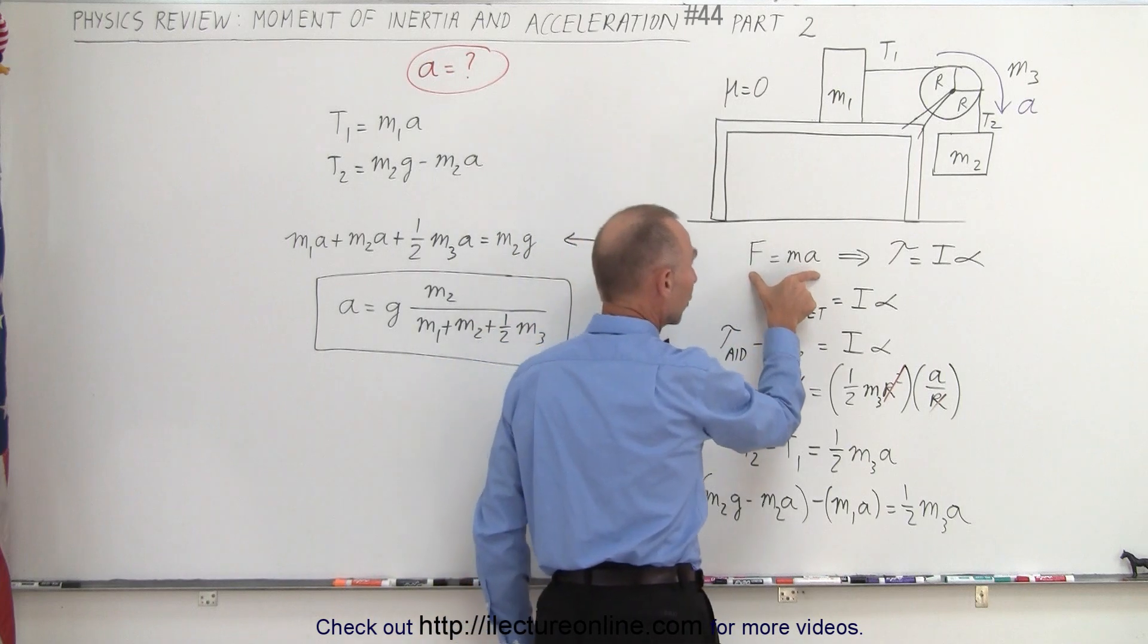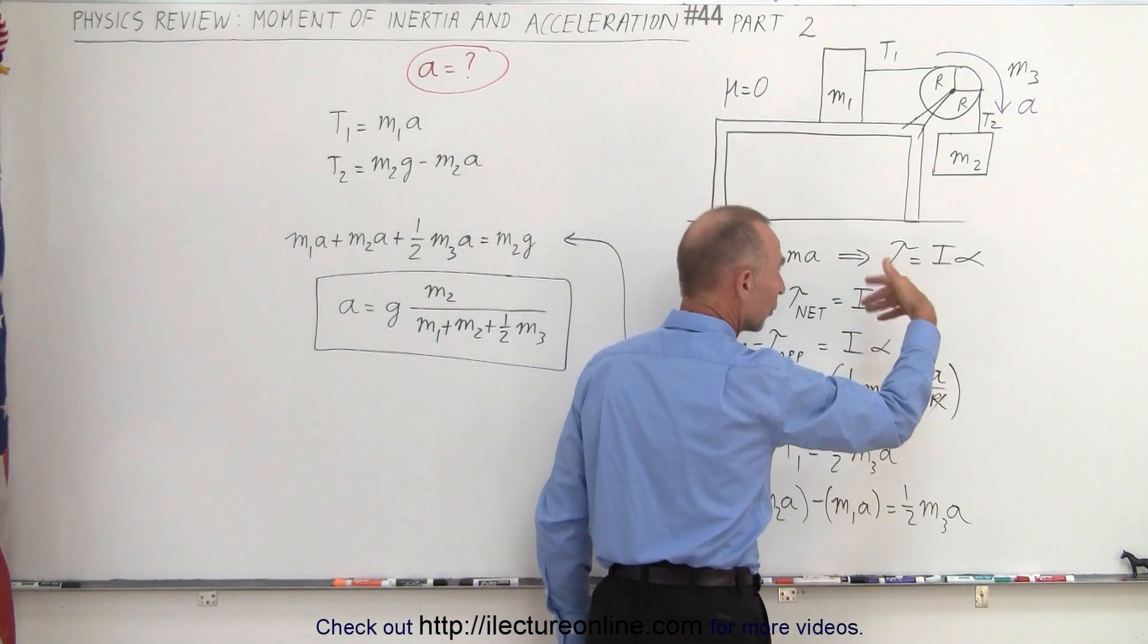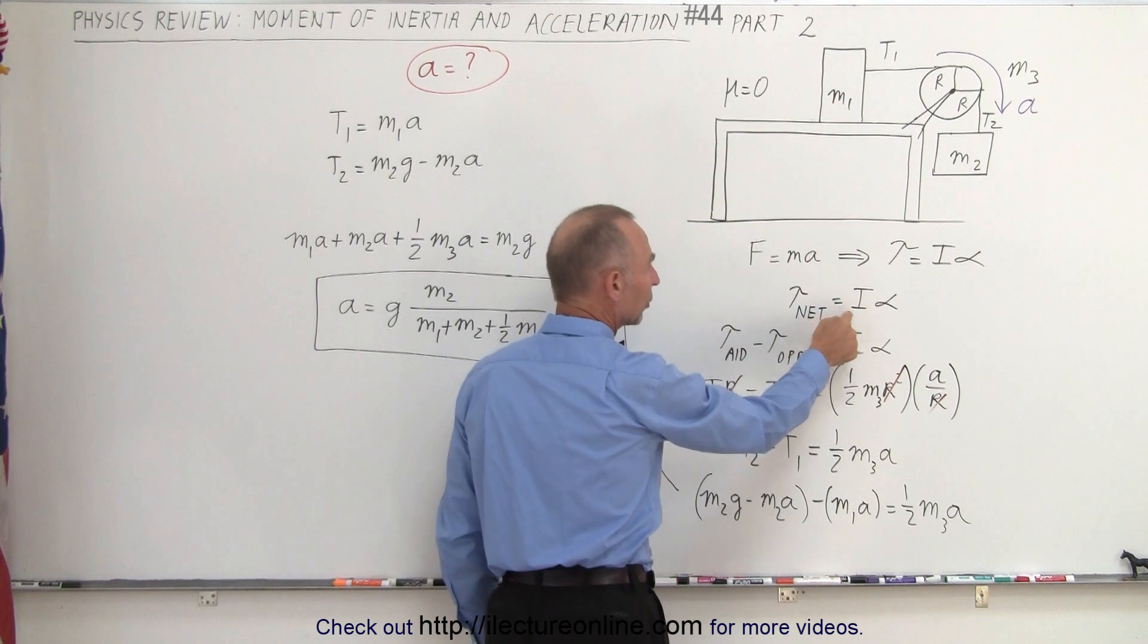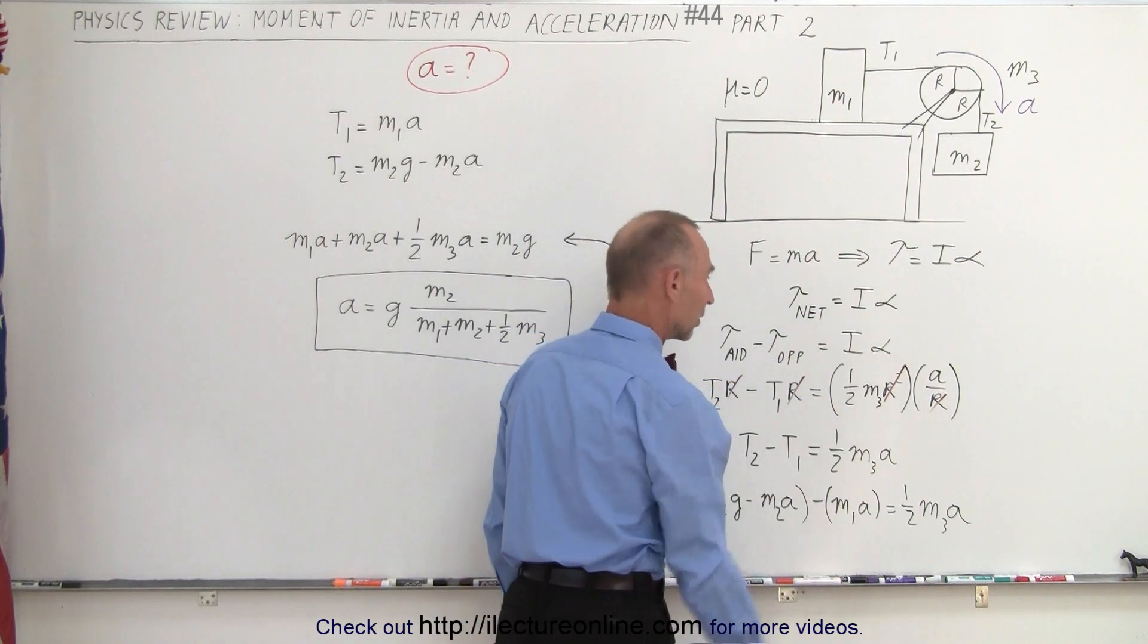So instead of using F equals MA, we're going to use torque equals Iα, the rotational equivalent. The net torque must equal the moment of inertia of the pulley times the angular acceleration.